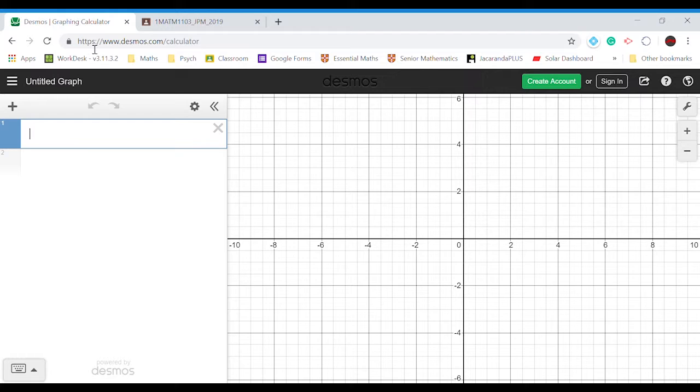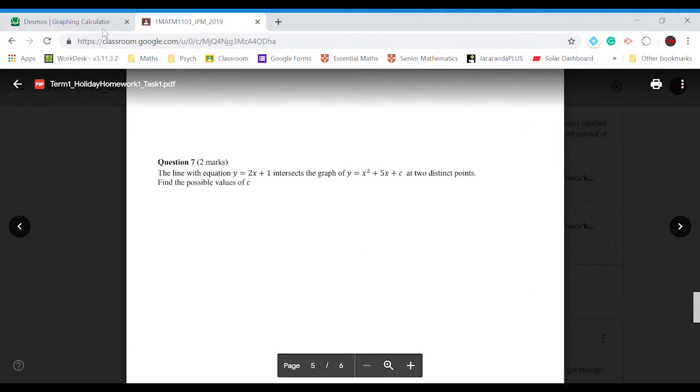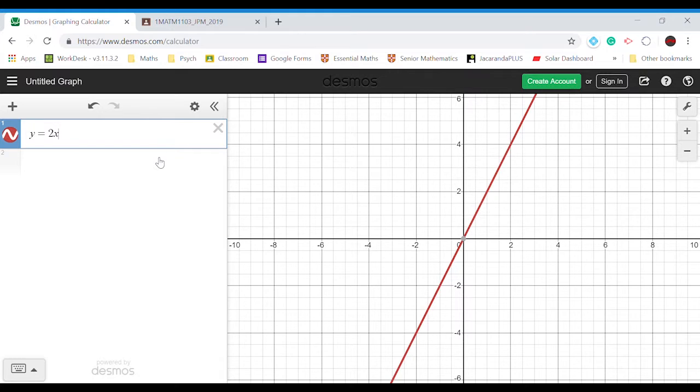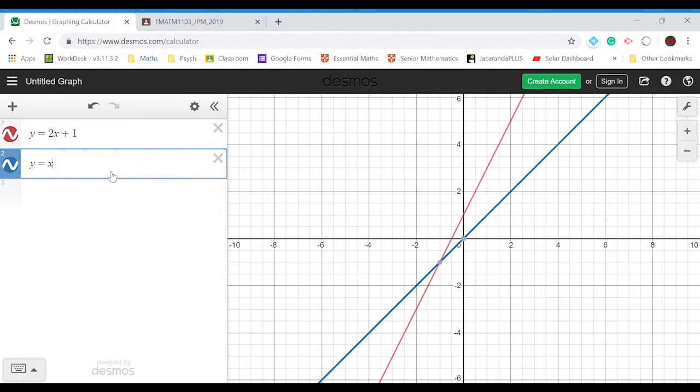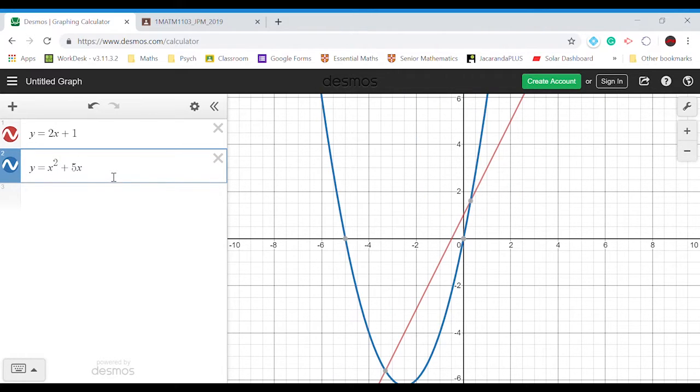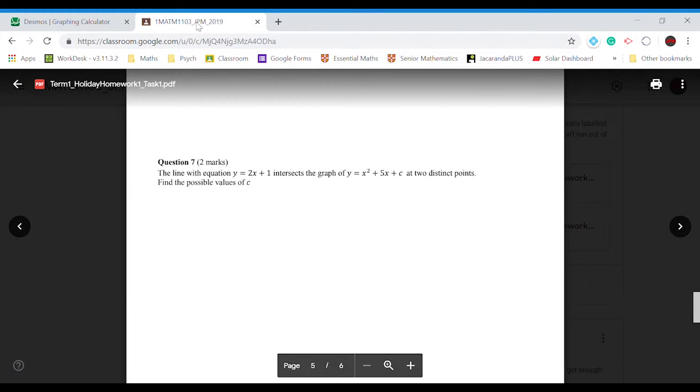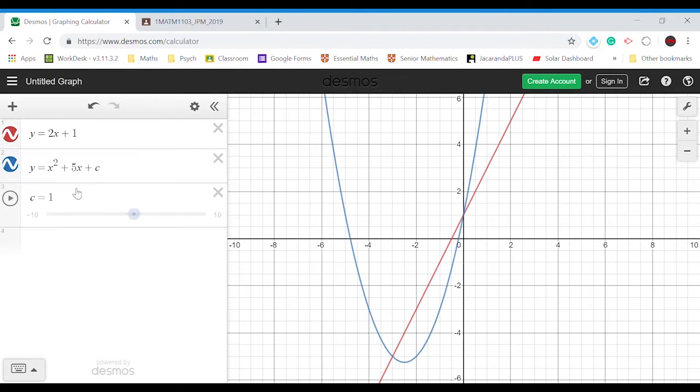If we look at a sketch of those two equations, y equals 2x plus 1 and y equals x squared plus 5x plus c, and we set a slider for c, we can see there's two equations, one's a straight line and one is a parabola, and as the value of c changes,